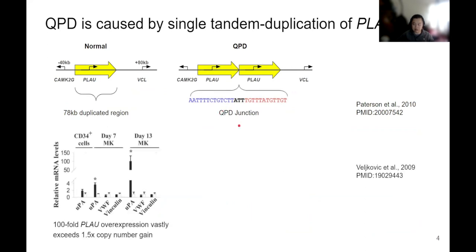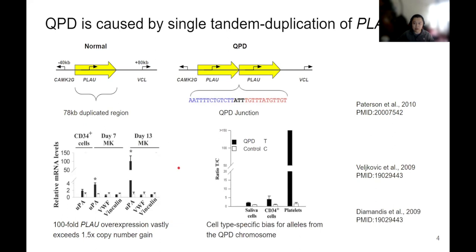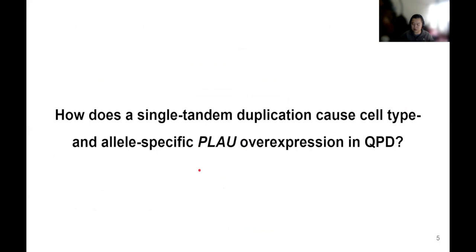However, many features of PLAU expression in QPD are inadequately explained by copy number gain alone. For example, the overexpression of PLAU seen in platelets and megakaryocytes is more than a hundred-fold above normal, vastly exceeding what you'd expect from a 1.5-fold copy number gain. Likewise, this overexpression is highly allele-specific and is only seen in platelets and megakaryocytes. This leaves us with a unique case where we must understand how a single tandem duplication can cause such a drastic cell type and allele-specific overexpression phenotype.